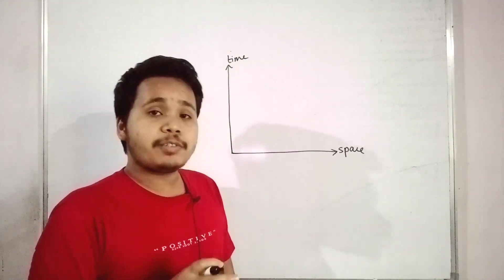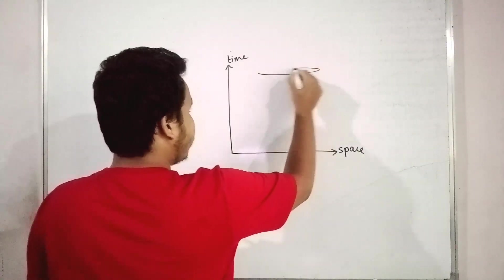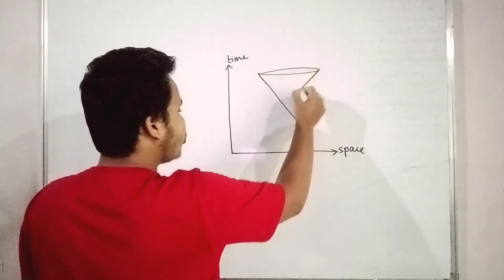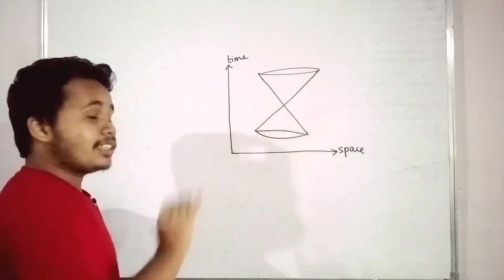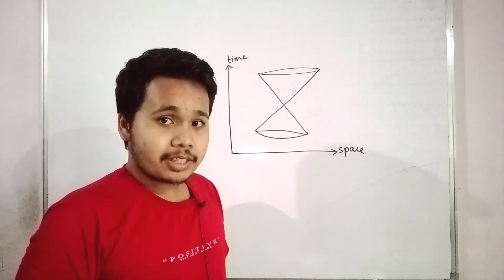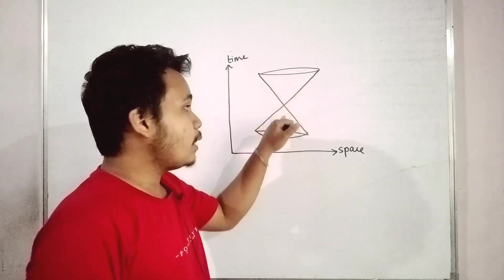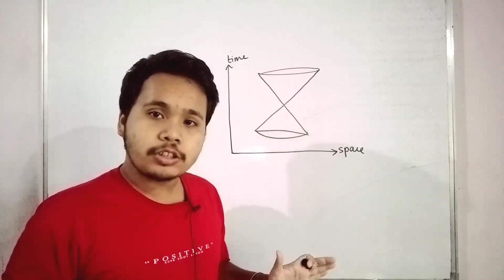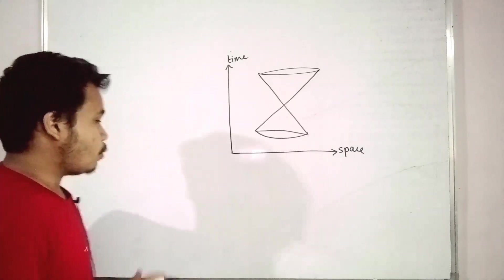If we capture the propagation of light, we will always get something like this diagram, irrespective of the frame you consider. This is called the diagram of the light cone. It is called the light cone because we get a cone shape due to the motion of the light.